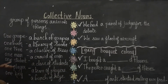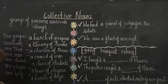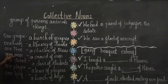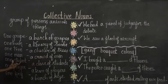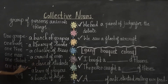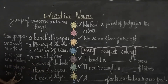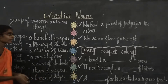Let's read the collective nouns once again. One grape — a bunch of grapes. One book — a library of books. One tree — a cluster of trees. One man — a crowd of men. One student — a class of students. One player — a team of players. One key — a bunch of keys.